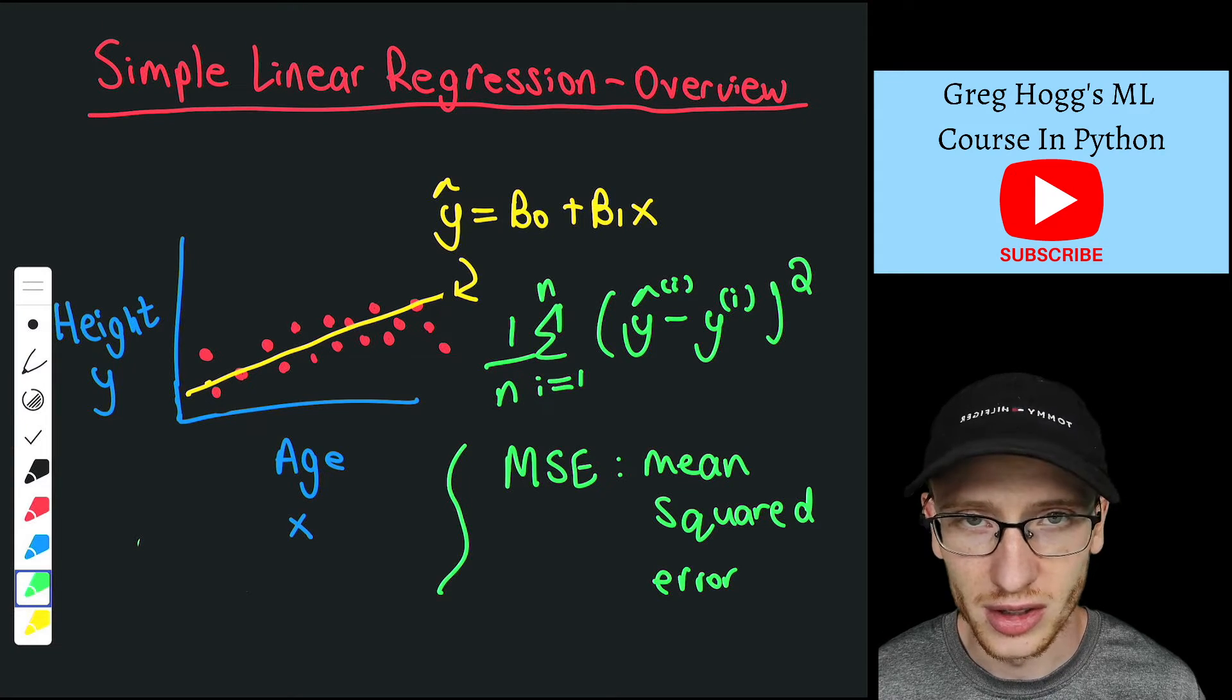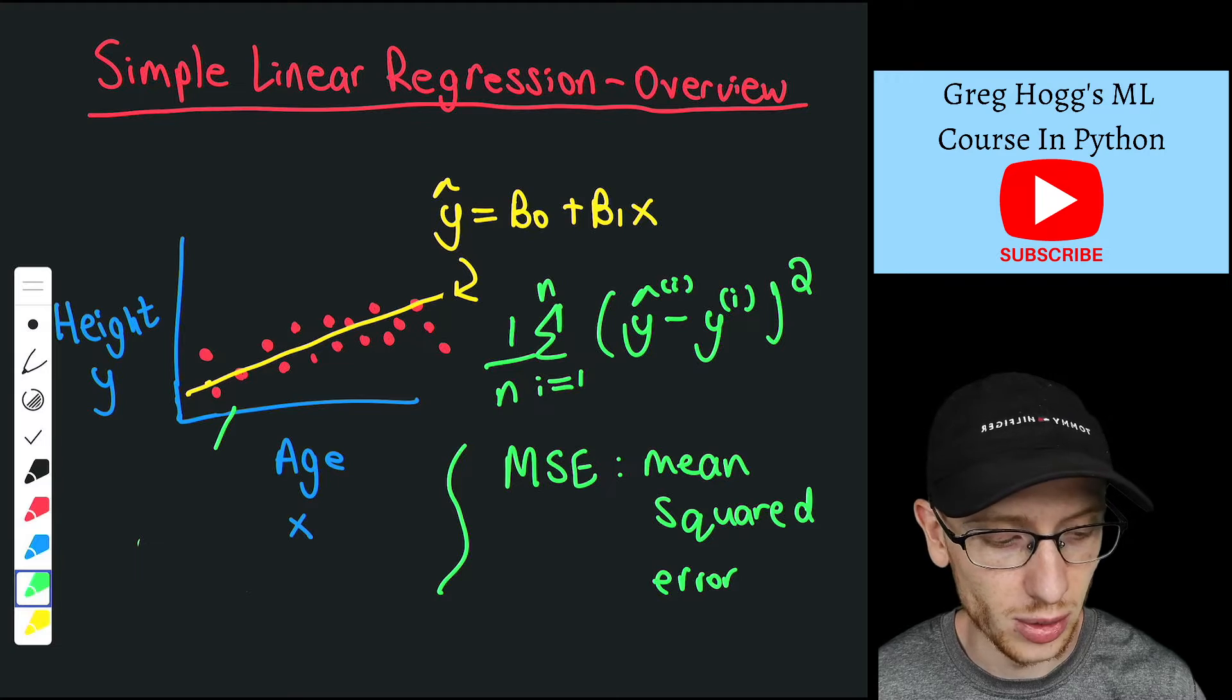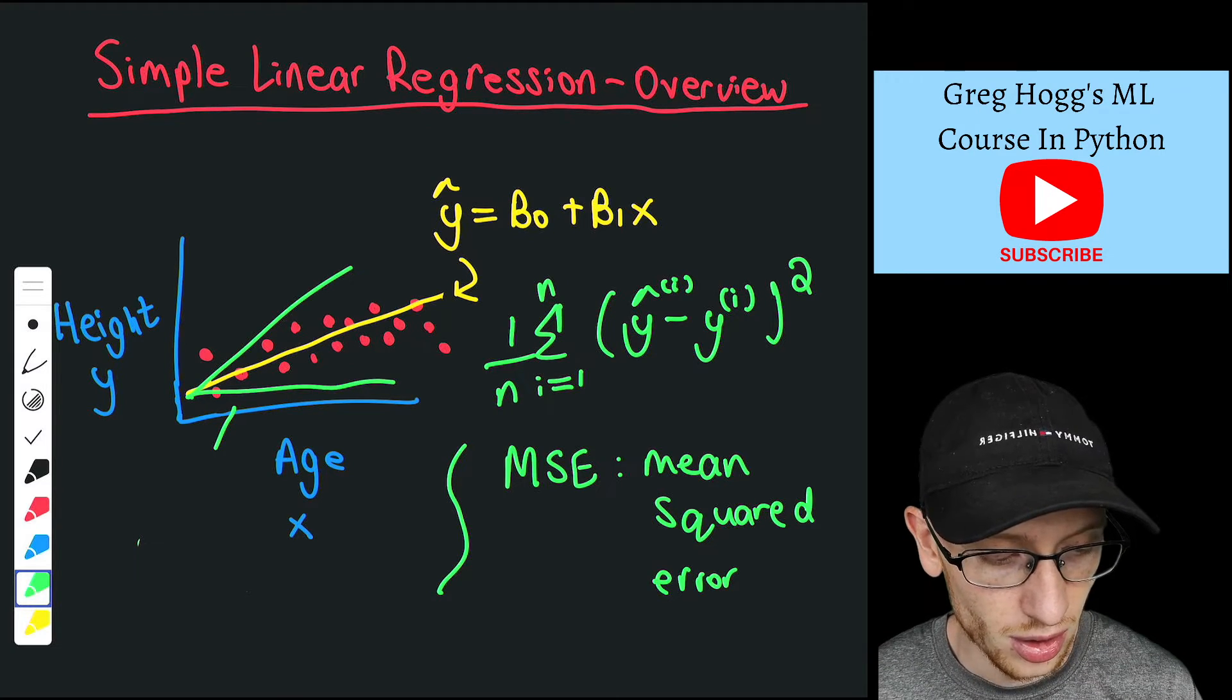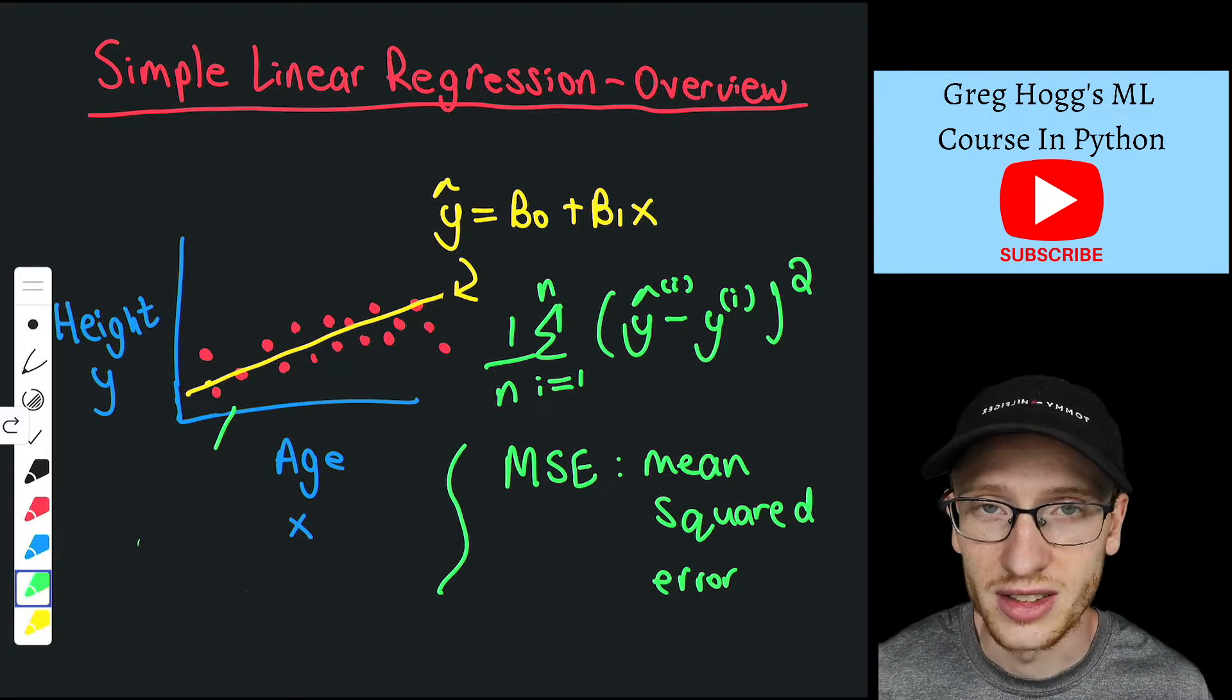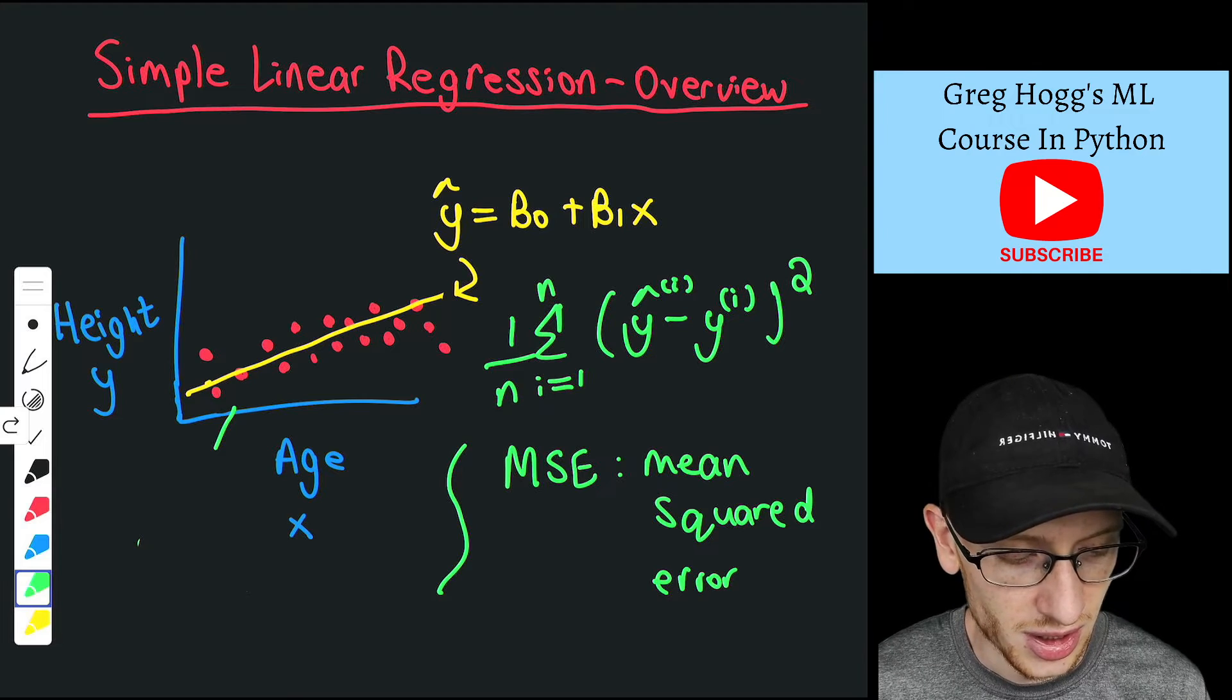So this can produce some value, given these points and a line, so whatever line we happen to draw, it could do it for this line, or for this line, or for the line that we already have. It gets some error, and that is a way of saying how good this line is.